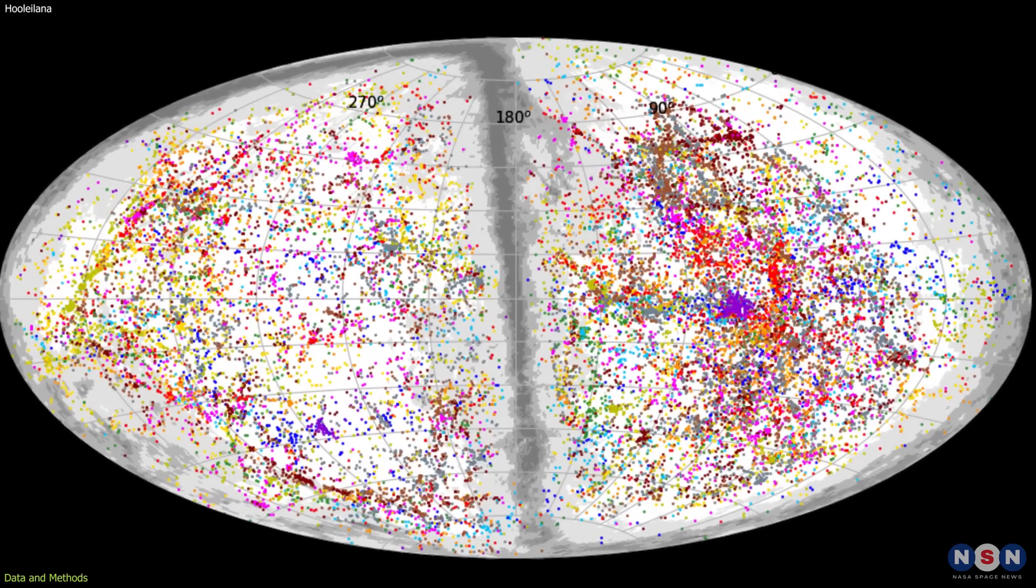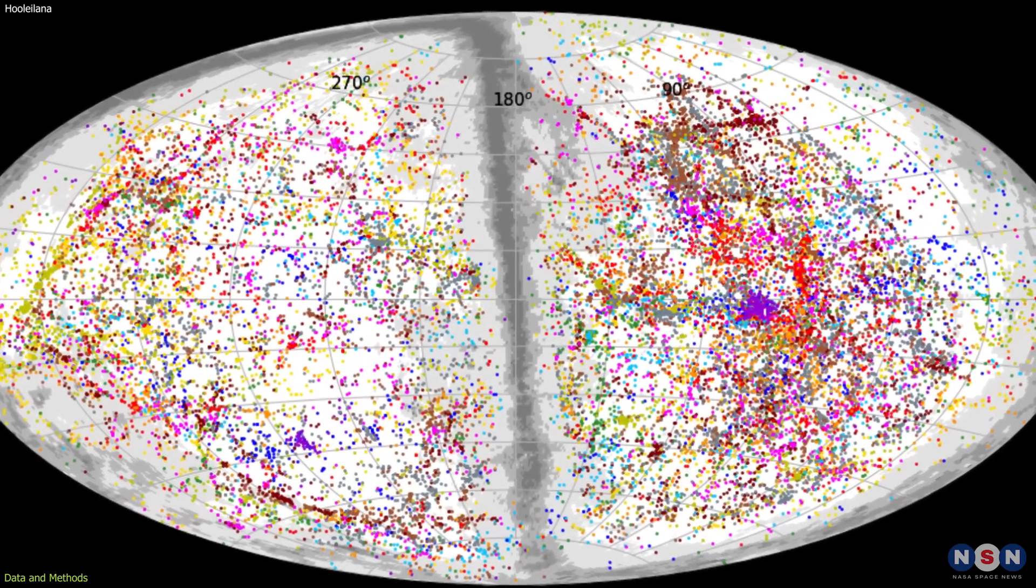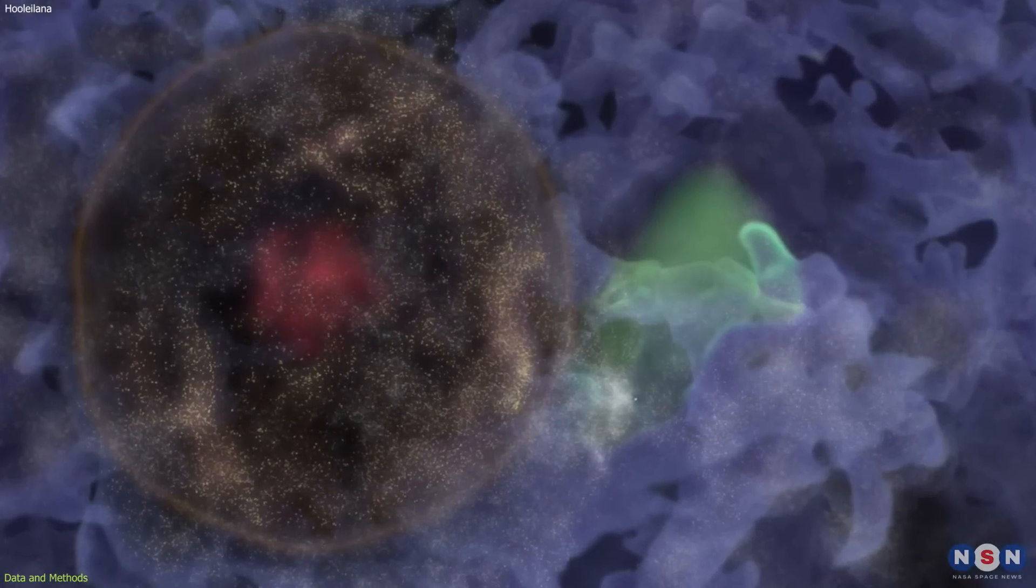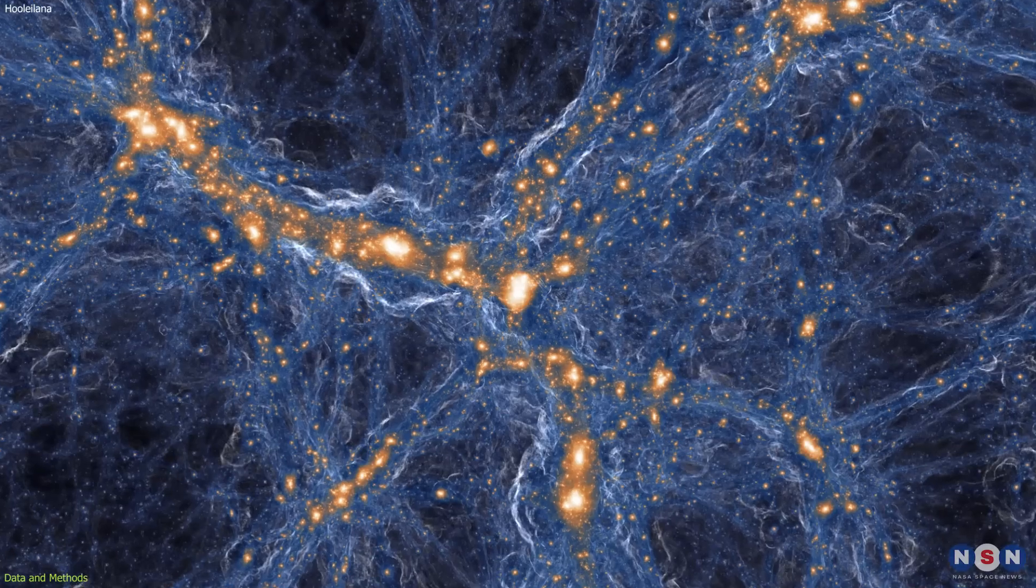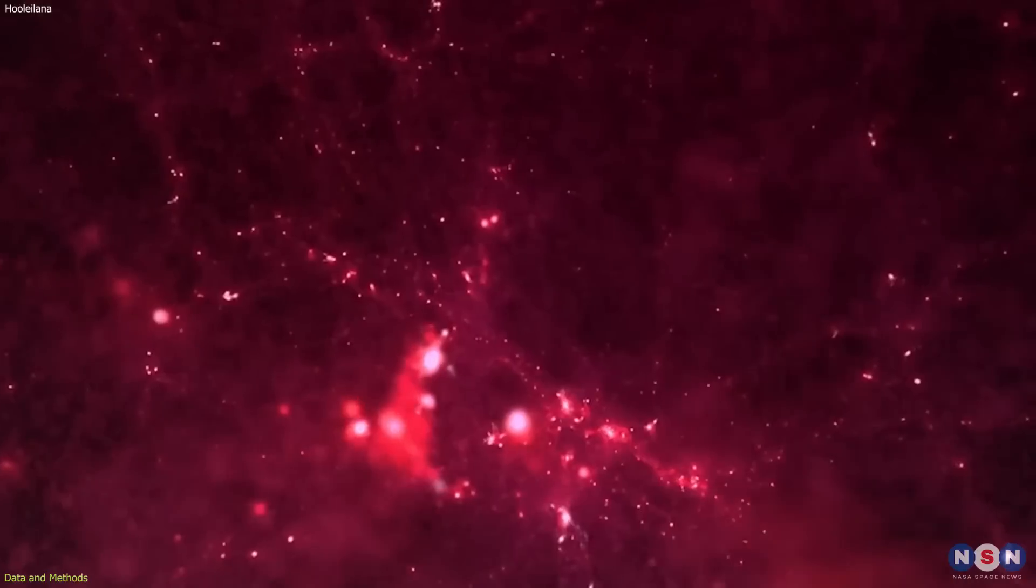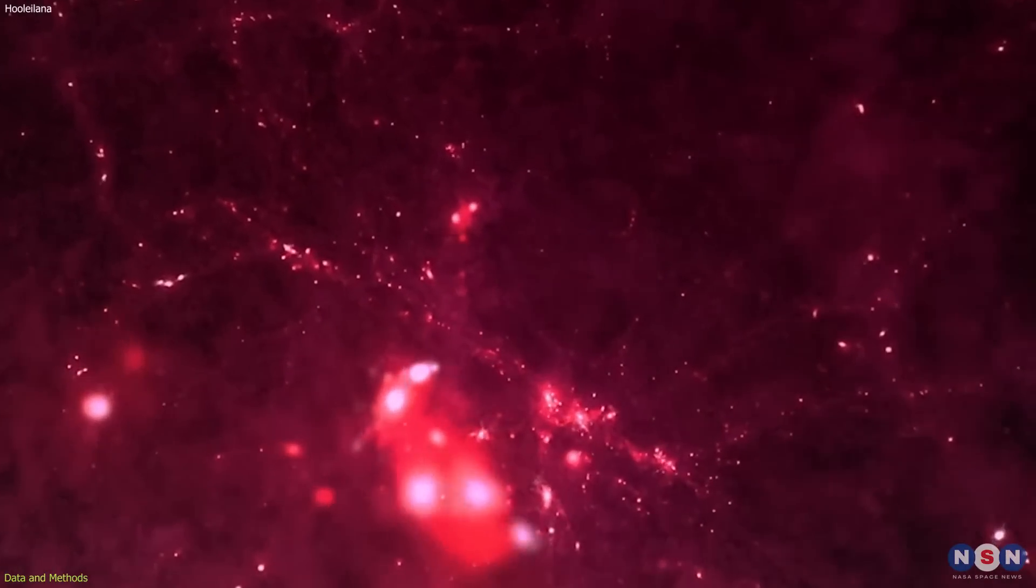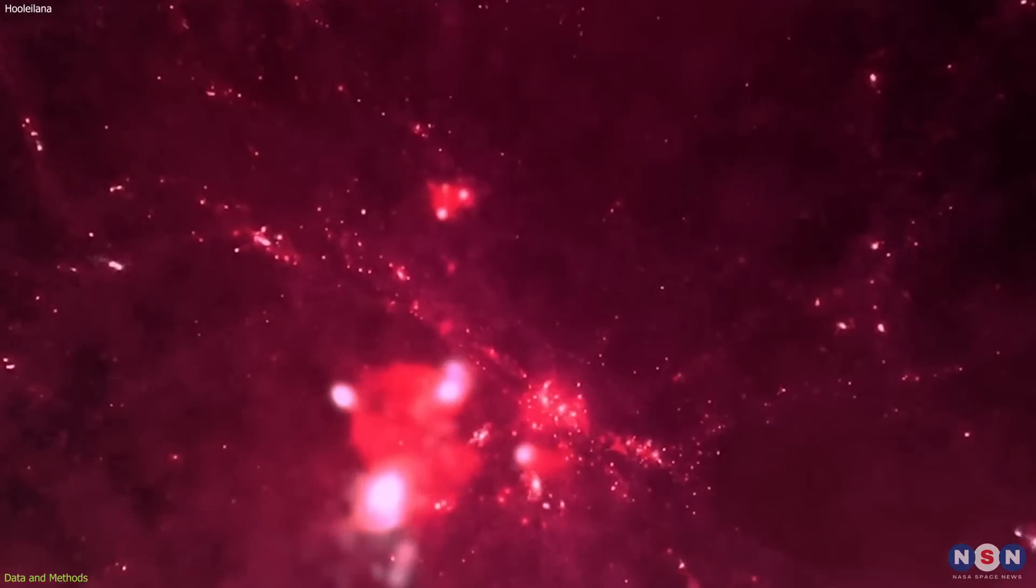On the other hand, if you see a region where there are fewer galaxies than expected, you might have found a void or a bubble of galaxies. These structures are not random, but reflect the underlying fluctuations in the density and temperature of matter in the early universe.